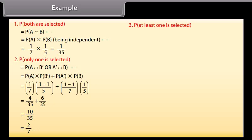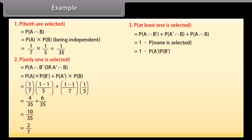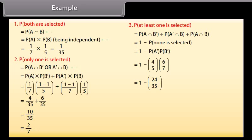3. Probability that at least one is selected = 1 − P(none is selected) = 1 − P(A′) × P(B′) = 1 − (6/7) × (4/5) = 1 − 24/35 = 11/35.